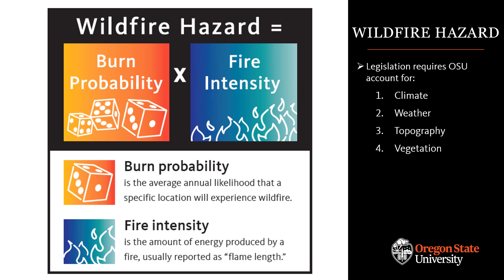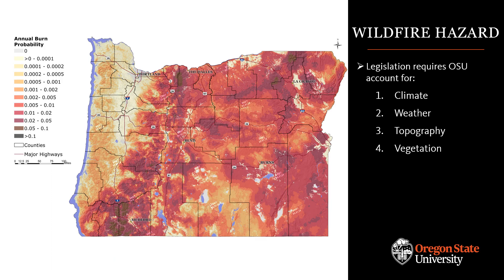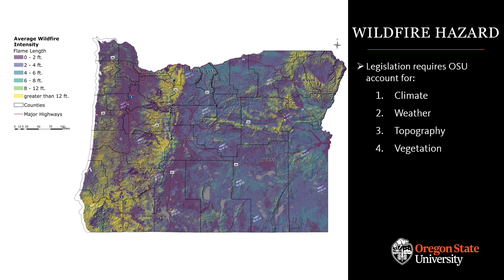Burn probability is the average probability that a specific location will be impacted by a wildfire in any given year. It helps agencies and others respond to wildfire risk strategically by prioritizing actions in landscapes and communities where fires are most likely to occur. Wildfire intensity represents the amount of energy released by a wildfire, and is usually represented as flame length. The greater the flame length, the more intense the fire. Including this information in hazard calculations helps state agencies prioritize not only areas where wildfire is most likely, but also areas where fires will be particularly difficult to suppress or might result in more damage to structures when they occur.